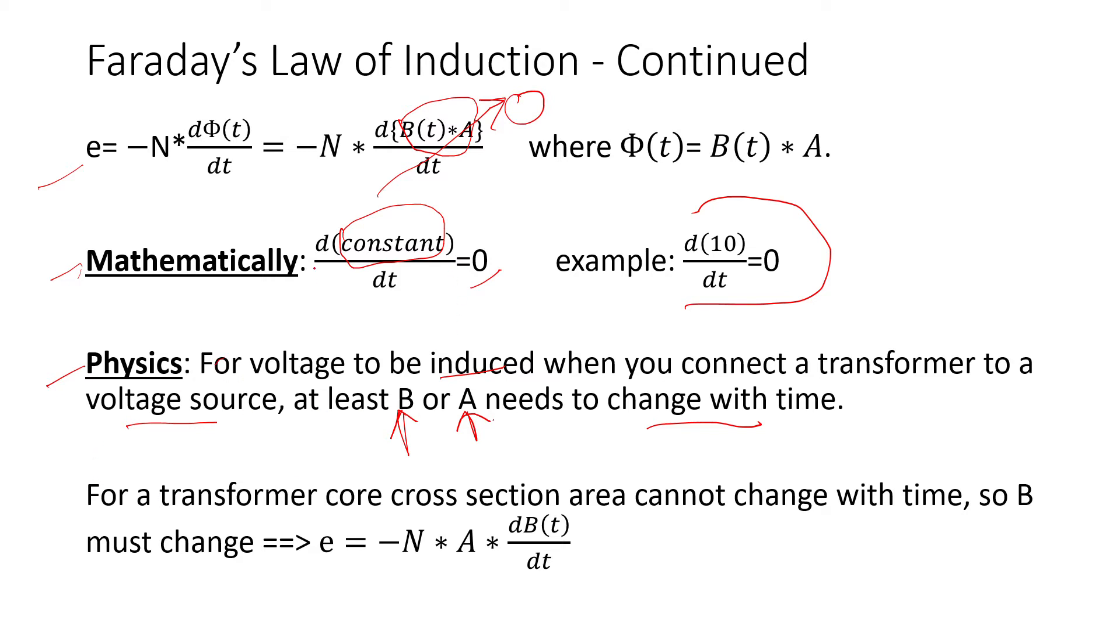For a transformer, the cross-section area cannot change because physically it's there—it cannot change with time. So the flux density B must change, and then we can rewrite Faraday's law so what really was changing is flux density.